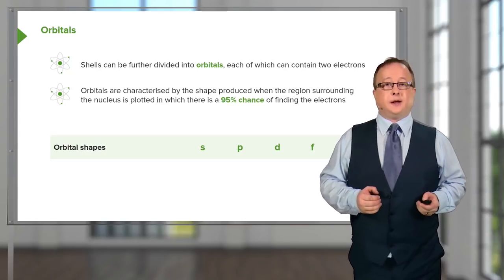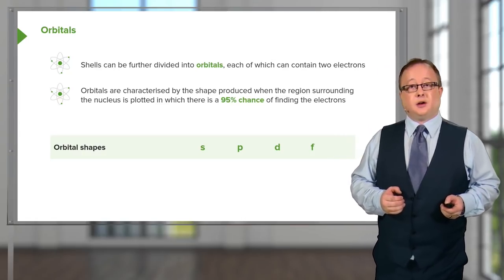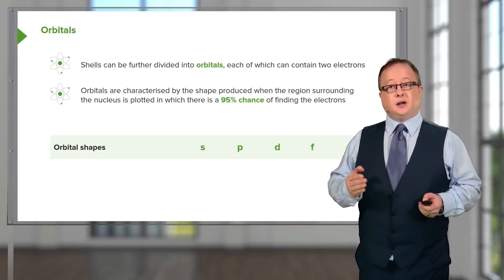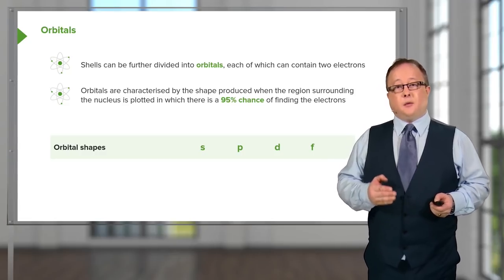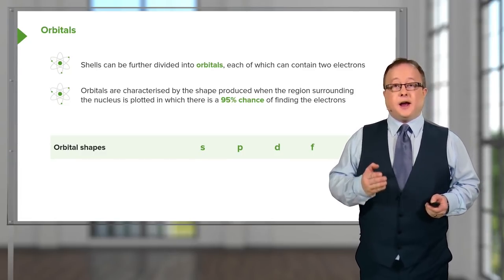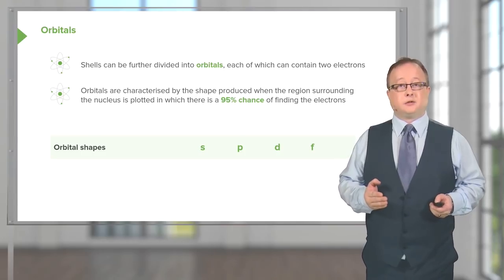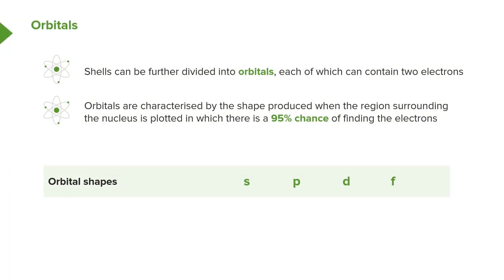The orbital shapes we will come across are S, P, D, and F — we'll mostly focus on S, P, and D orbitals. Each shell unlocks an additional orbital type. For the first shell, you can only get the S type orbital. For the second shell, S and P. For the third shell, S, P, and D. For the fourth, it's possible to have all four, bearing in mind each individual orbital can only contain two electrons.